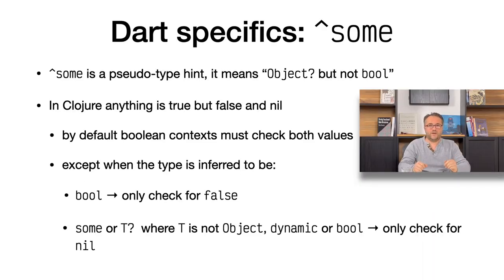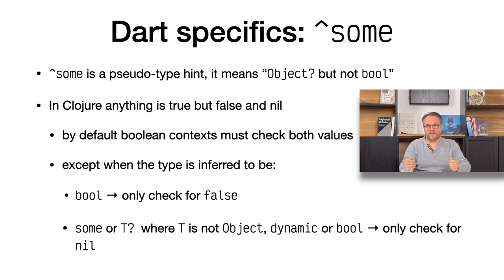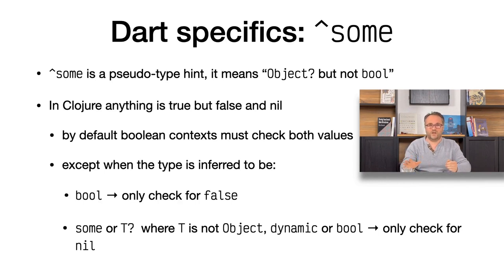Still speaking about nil: in Closure, everything is true except for false and nil, and it's the same in ClojureDart. However, to make tests more efficient, when we know that we are going to get a bool, we don't test for nil. When something is clearly not a boolean, like it's a `string?`, we only test for nil. When, as a user, we know that it's not going to be a boolean, we can use the `some` metadata. For example, the `seq` function is going to return either nil or a sequence, and a sequence is whatever implements the sequence protocol — so we can't type what a sequence is in Dart. But we know it's not going to be a boolean, so we have this `some` pseudotype specific to ClojureDart to tell the compiler it's going to be nil or something which is definitely not a boolean.